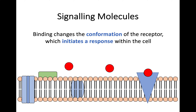When that signaling molecule binds to the receptor, that is going to change the conformation of the receptor — conformation being the shape — and that in turn is going to initiate some sort of response within the cell.